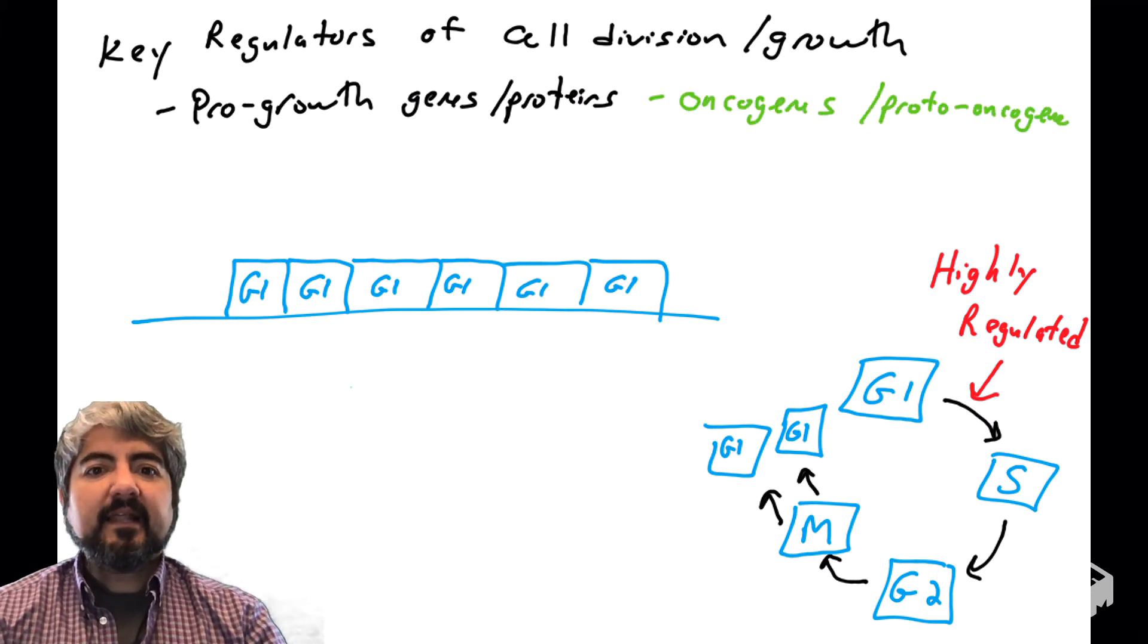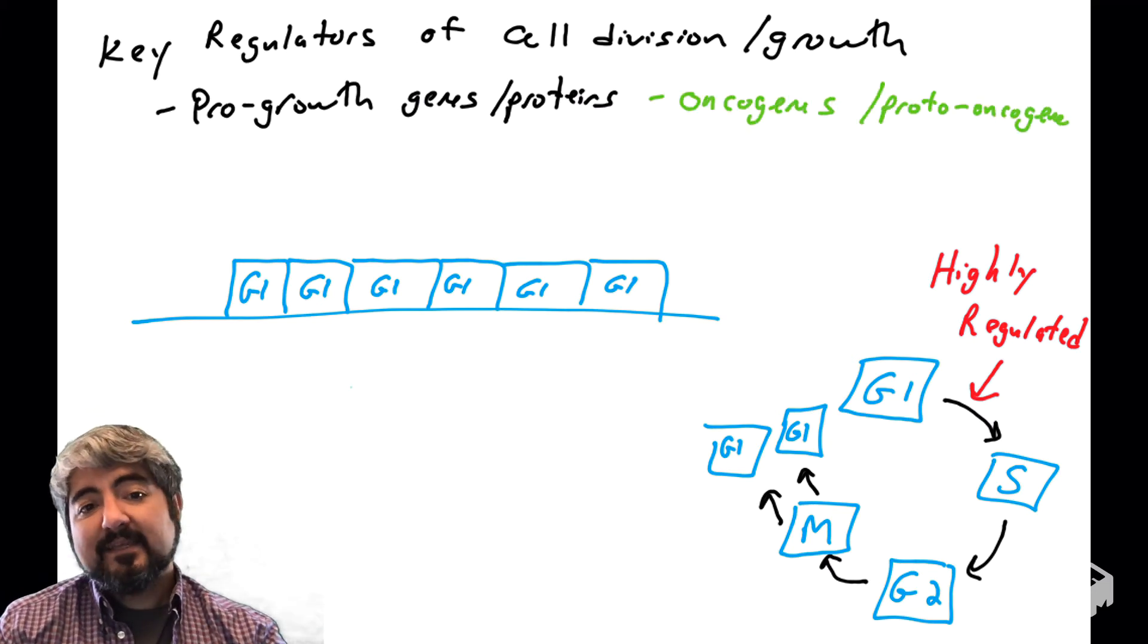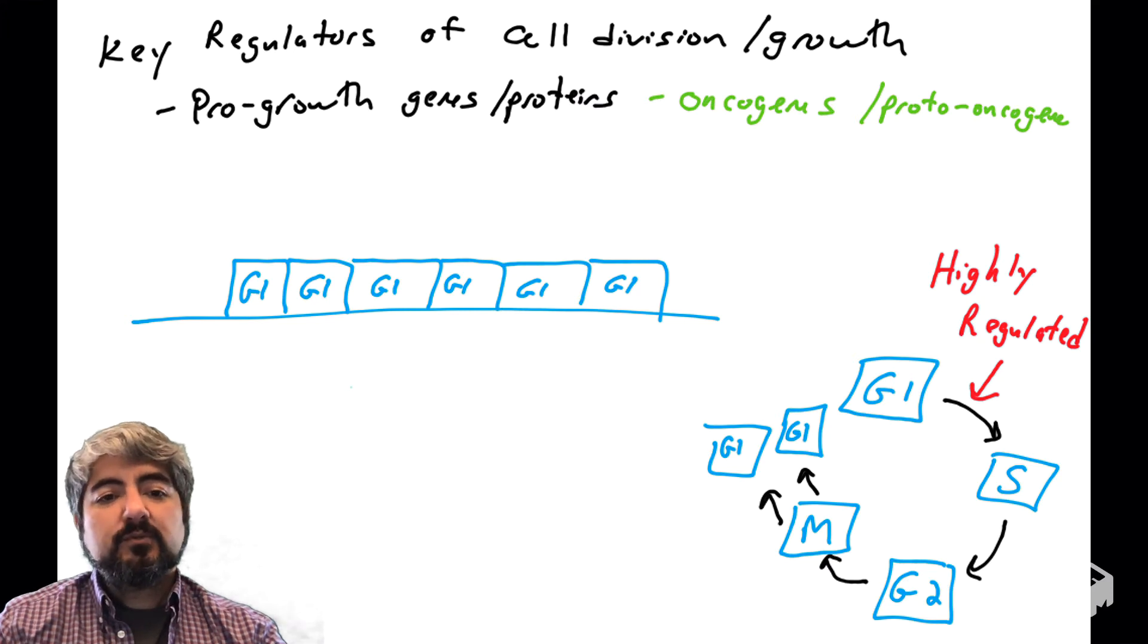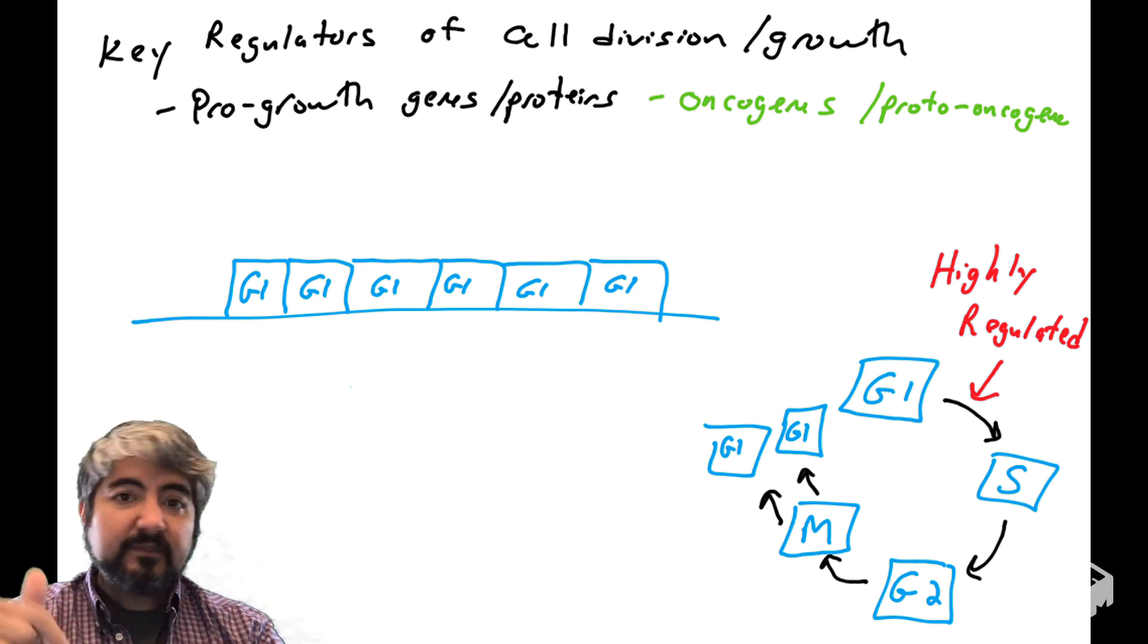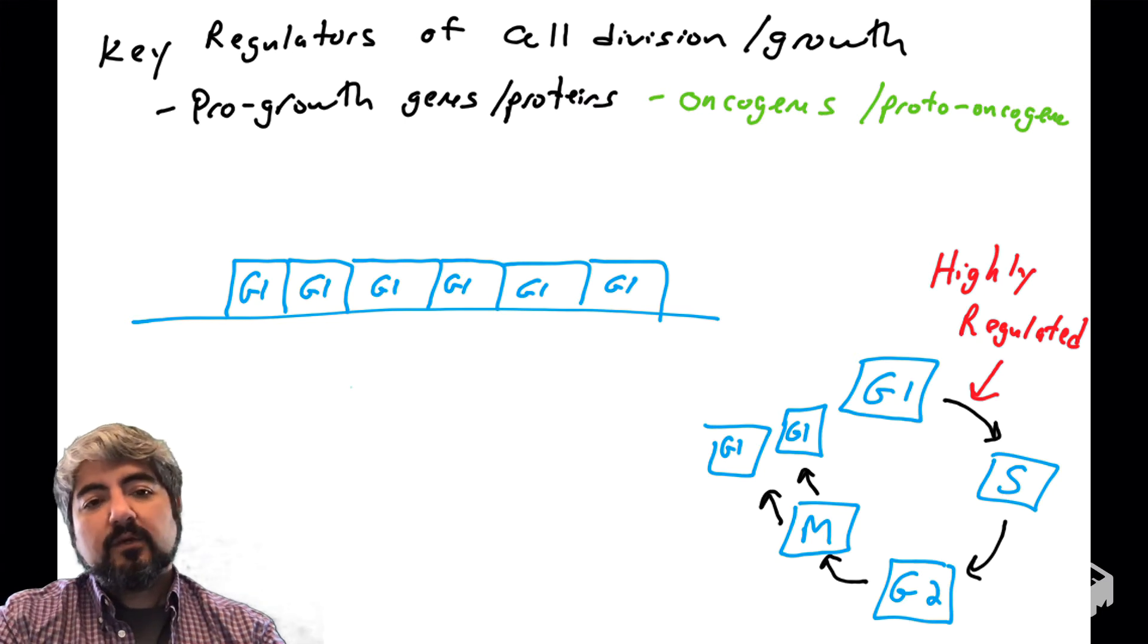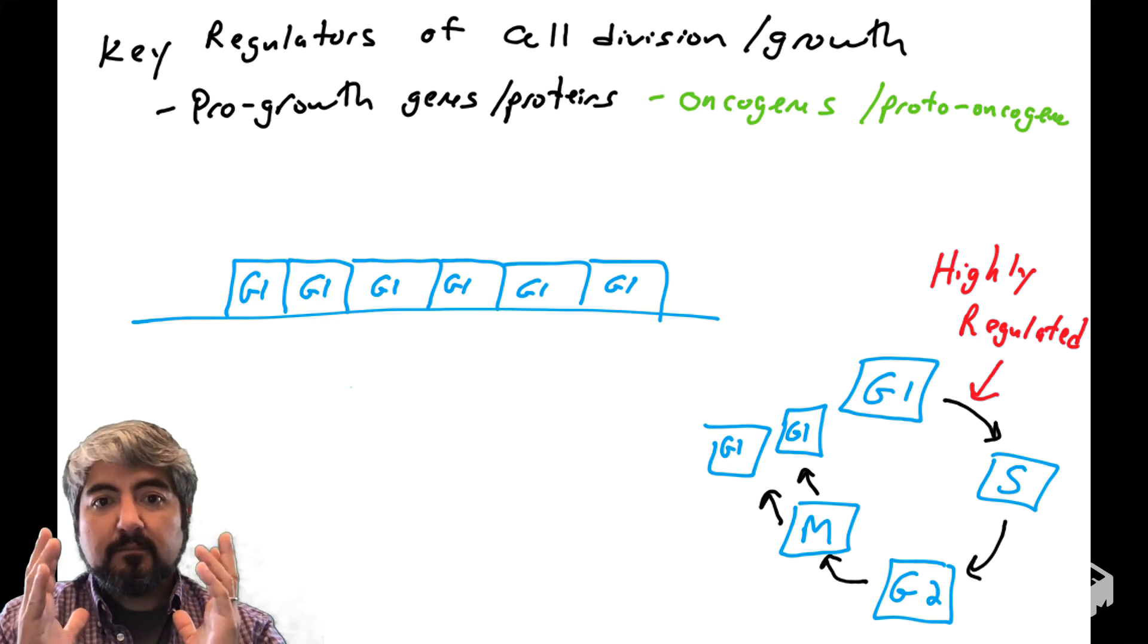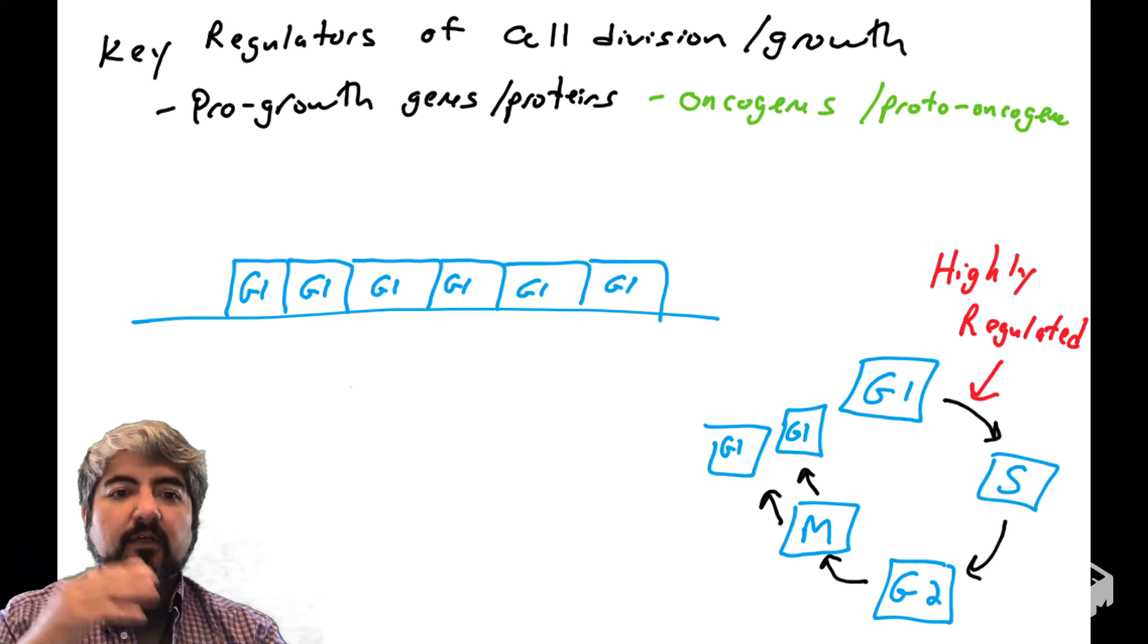In cancer, these genes tend to be mutated so that, in fact, you get movement through the cell cycle when you shouldn't be going through the cell cycle. So that would be genes such as oncogenes. Oncogenes are pro-growth genes that are mutated and push the cell through the cell cycle.